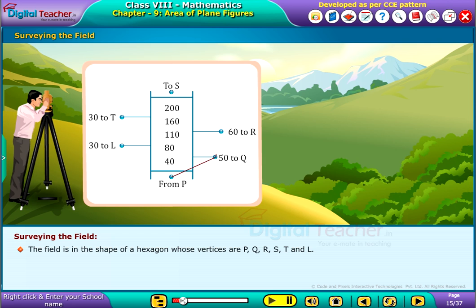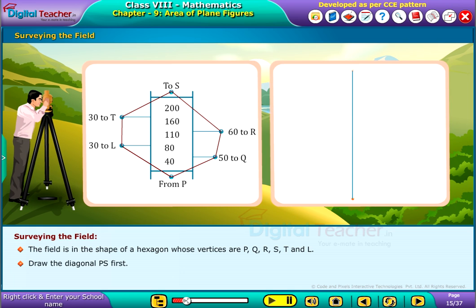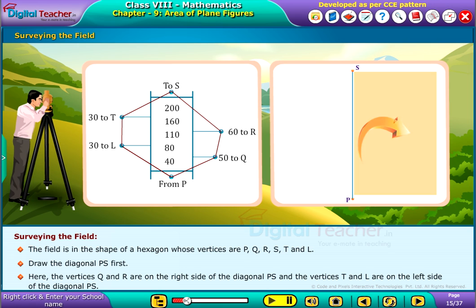The field is in the shape of a hexagon whose vertices are P, Q, R, S, T and L. Draw the diagonal PS first. Here the vertices Q and R are on the right side of the diagonal PS and the vertices T and L are on the left side of the diagonal PS.